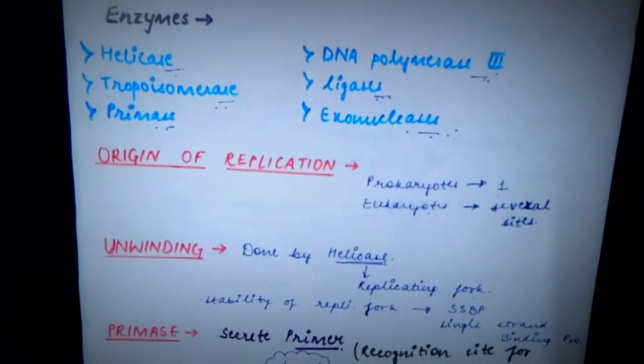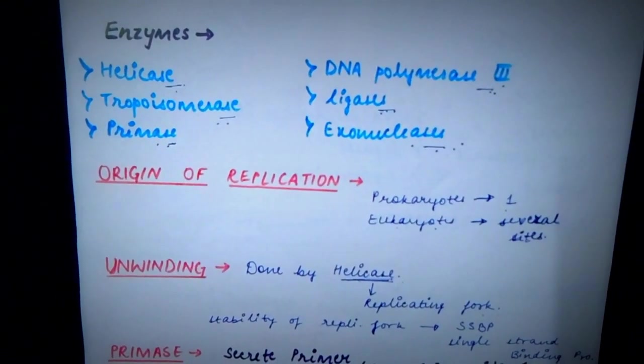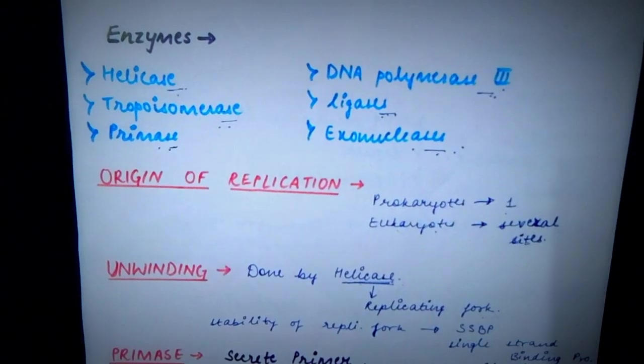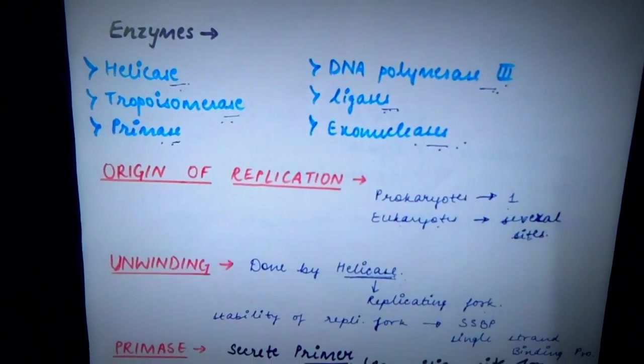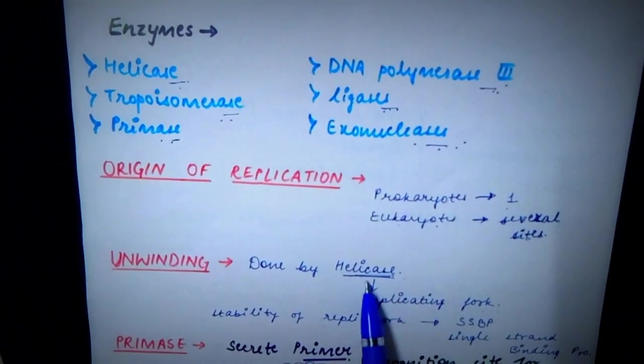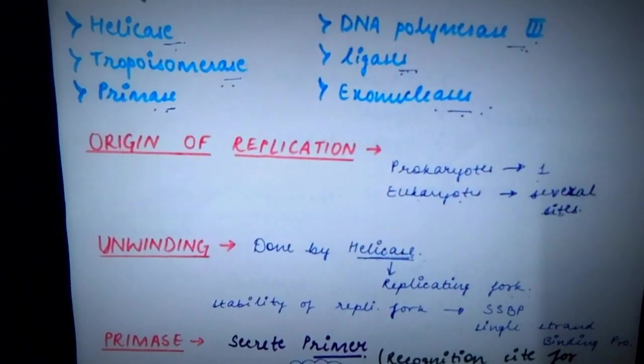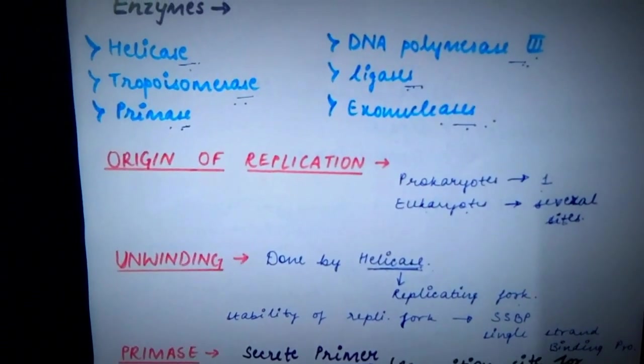So as we all know that DNA is a double helix structure. So there is a need to unwind these two strands in order to start the DNA replication process. So the unwinding of the two strands is done with the enzyme which is known as helicase. Helicase leads to the formation of a structure which is known as replicating fork.